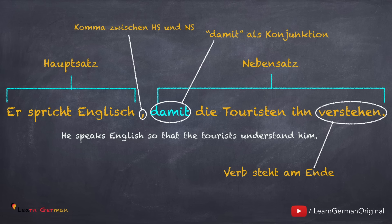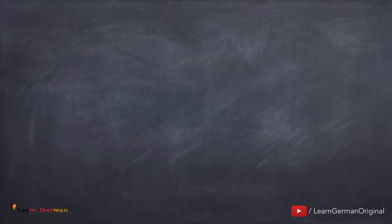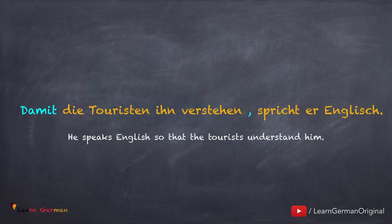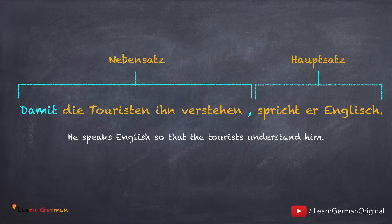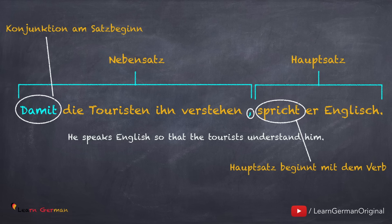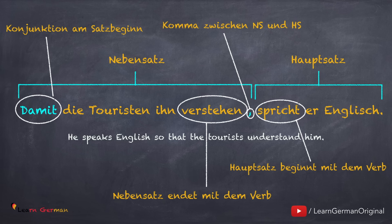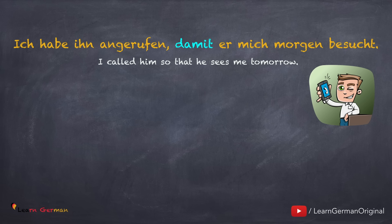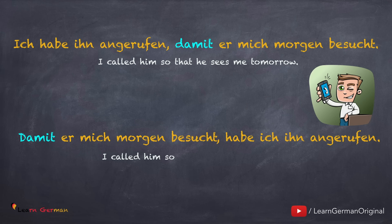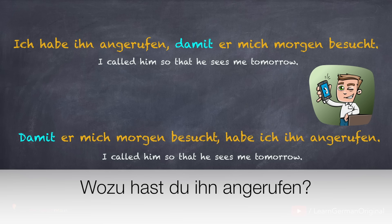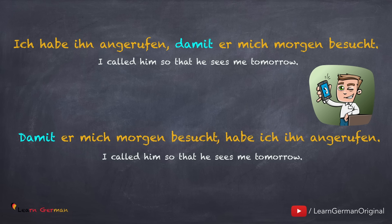There is a Hauptsatz and a Nebensatz. In the Nebensatz, the verb will be placed at the end. Man kann auch mit dem Nebensatz anfangen: Damit die Touristen ihn verstehen, spricht er Englisch. Hier steht der Hauptsatz nach dem Nebensatz. Man beginnt mit der Konjunktion, d.h. damit steht am Anfang. Der Hauptsatz beginnt mit dem Verb und zwischen beiden Sätzen steht ein Komma. Nebensätze enden immer mit dem konjugierten Verb. Hier ist ein weiteres Beispiel: Ich habe ihn angerufen, damit er mich morgen besucht. Damit er mich morgen besucht, habe ich ihn angerufen. Die Frage in diesem Fall wäre: wozu hast du ihn angerufen? So the sentences with damit show you a purpose or an intention.